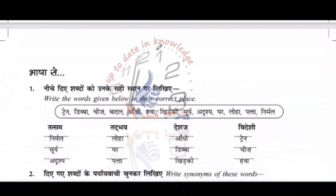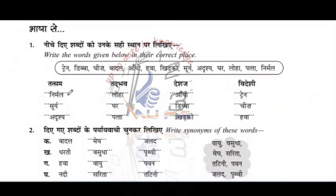Here are some English language words as examples of Videsi words: deeper box, kideki, window, train, cheej, hawa, vessel.